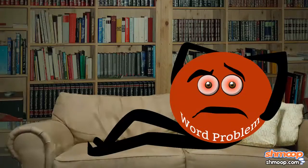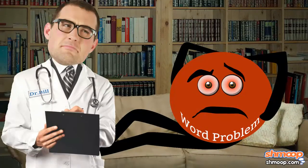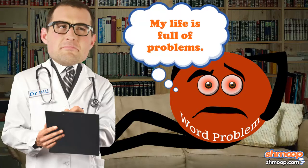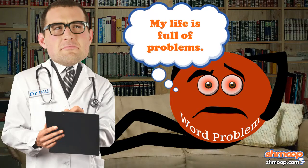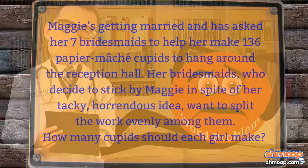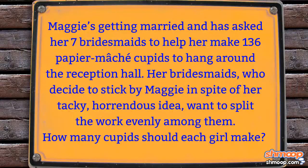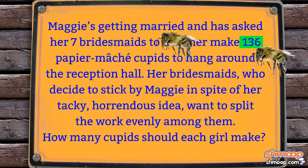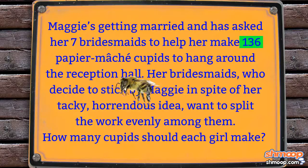Okay, so when presented with a word problem like this, the first thing we need to do is make sure we understand everything the problem is telling us. For example, we know we've got 136 cupids that have to be made. But how many workers do we have assigned to the project?